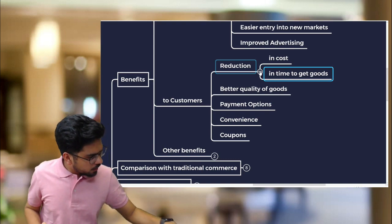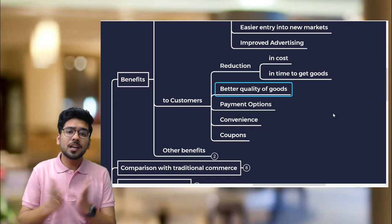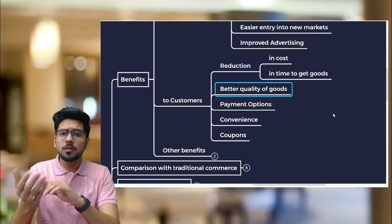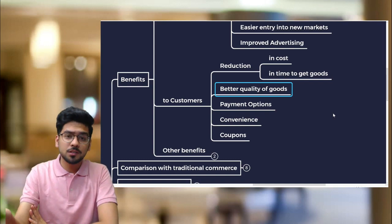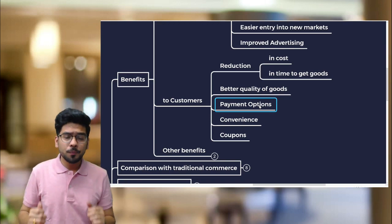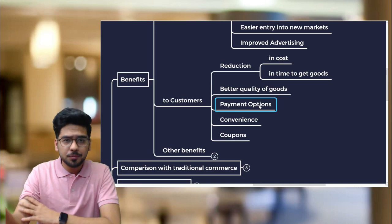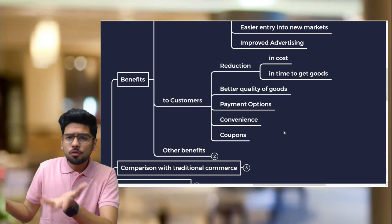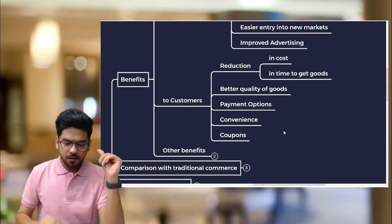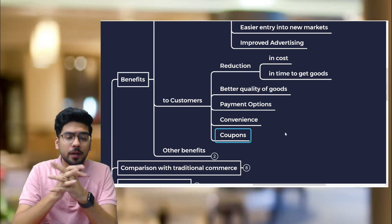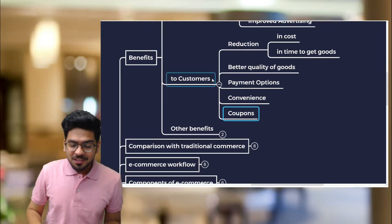Customers also get better quality of goods because they can read reviews and feedback from previous customers before making a purchase decision. Various payment options are available — cash on delivery, credit card, debit card, net banking, and UPI apps. Shopping online is also very convenient: you can access the market anytime, anywhere, even post-midnight. Vendors also issue attractive coupons and discounts.